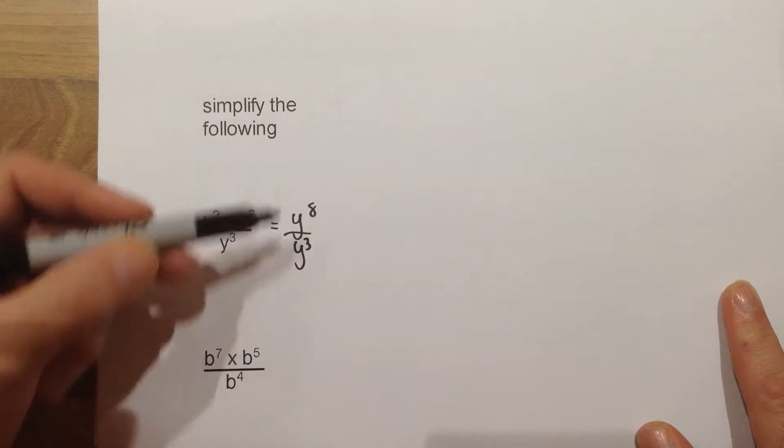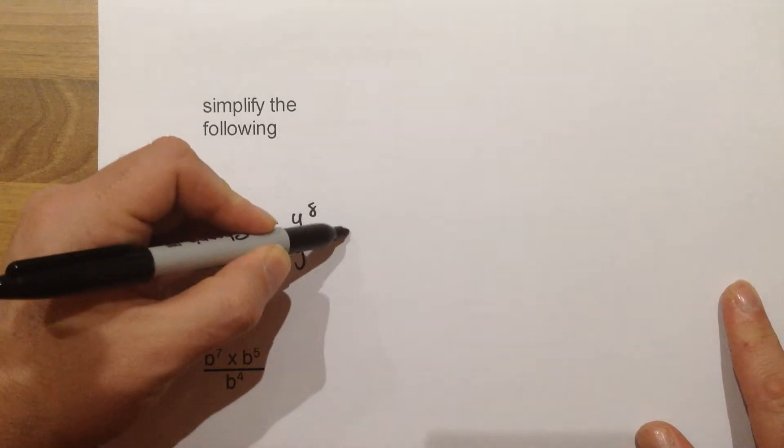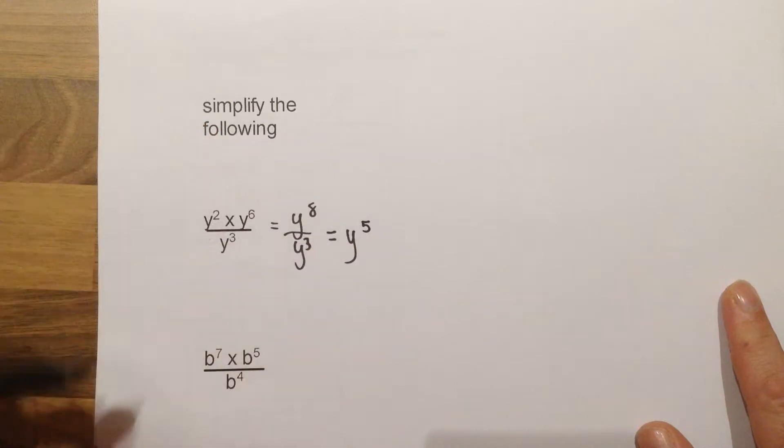therefore over y to the power 3. When you are dividing, you subtract the powers with the letter staying the same. So here this would give us y to the power 5.